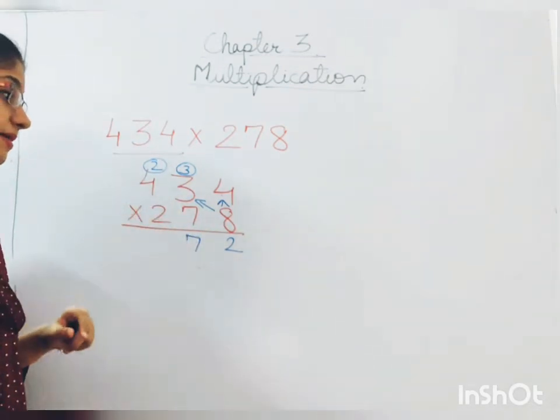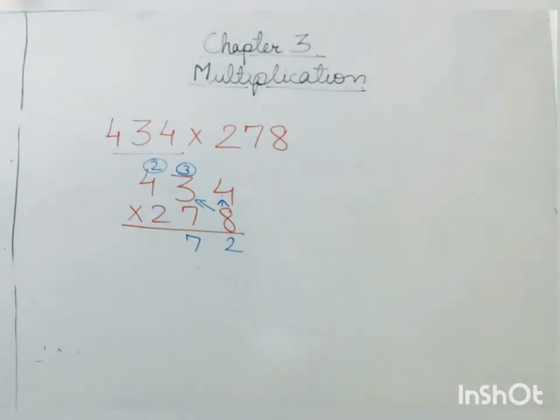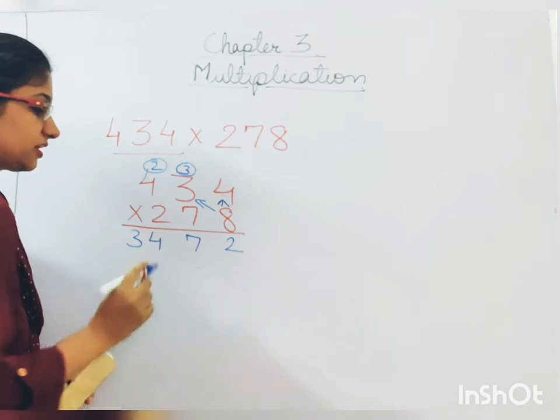Next, 8 multiplied by 4. 8 multiplied by 4 will be 32. Plus 2. That will be 34. 33, 34.